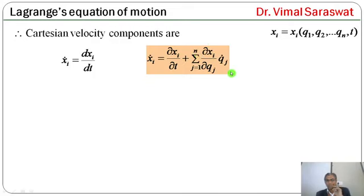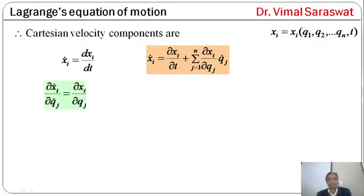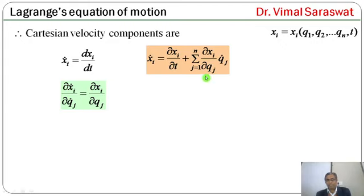This is the velocity of the i-th Cartesian coordinate. The i-th Cartesian velocity xi_dot equals ∂xi/∂qj terms. If we differentiate this equation with respect to qj_dot, then ∂xi_dot/∂qj_dot = ∂xi/∂qj.